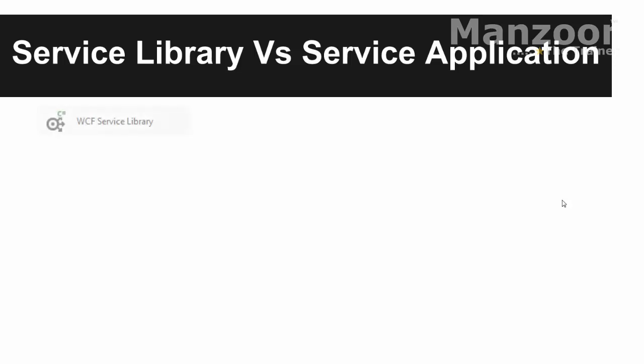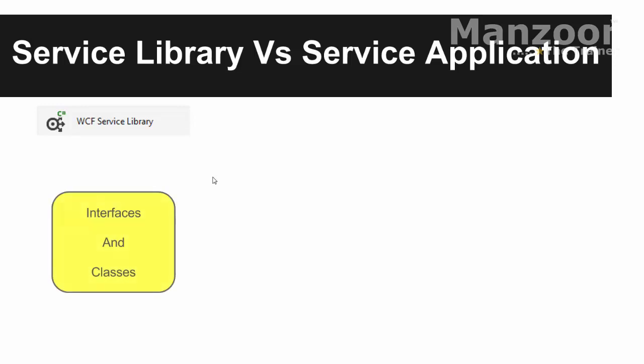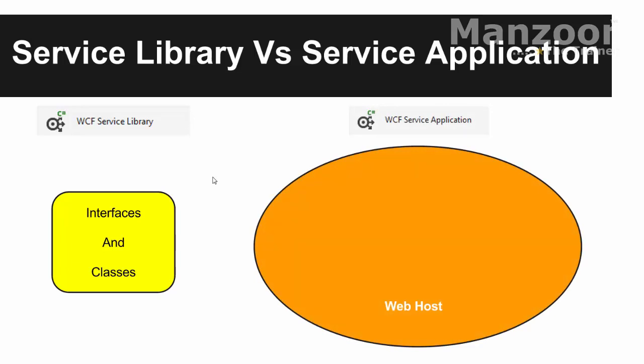Let's understand the difference between a service library and a service application. You will find a specific icon whenever you want to create a WCF service library. A service library contains interfaces and classes — that's it. So whenever I create a WCF service library project, it means I will have interfaces and classes in it. A service application, on the other hand, is nothing but a host — you can call it a web host.